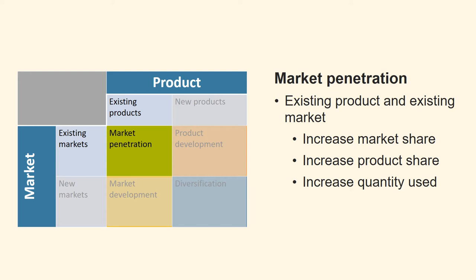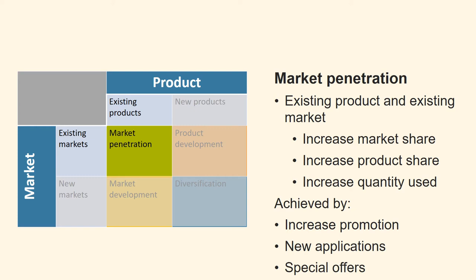The first is market penetration strategy, in which a firm sets out to increase market share within existing market segments. This can be achieved by selling more products and services to established customers, or by finding new customers within existing markets. With this strategy, the company aims to increase market share, increasing product share and increasing quantity used. This is the most frequently used strategy and can be achieved by more aggressive promotion, increased promotion, finding new applications, and by giving special offers — for example, buy two for the price of one, often seen in products such as sweets and chocolate.